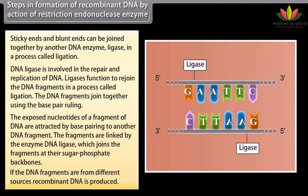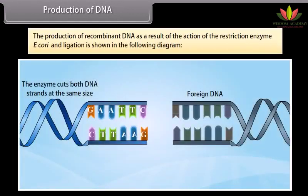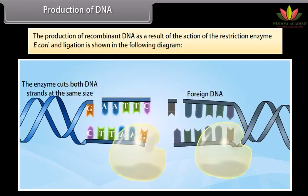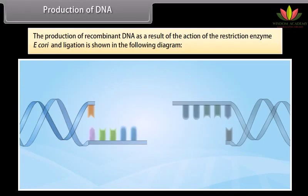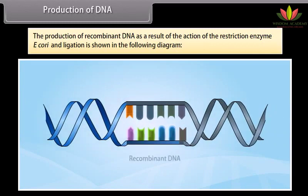If the DNA fragments are from different sources, recombinant DNA is produced. The production of recombinant DNA as a result of the action of the restriction enzyme EcoRI and ligation is shown in the following diagram. The enzymes cut both DNA at the same site. After that, both DNA fragments can be joined at the sticky ends, resulting in a recombinant DNA.